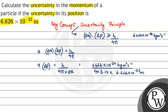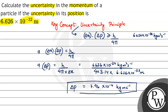Now solving this, it comes out to be 7.96 into 10 to the power minus 4 kilogram meter per second. This is the uncertainty in momentum that we were supposed to find out. This is how we solve this question.